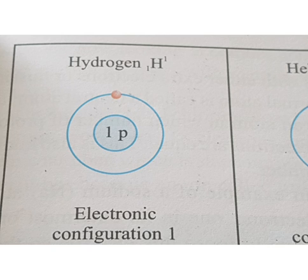As you can see on the screen, there is one electron in the K orbital. Remember this: in the first orbital, only two electrons are possible maximum.